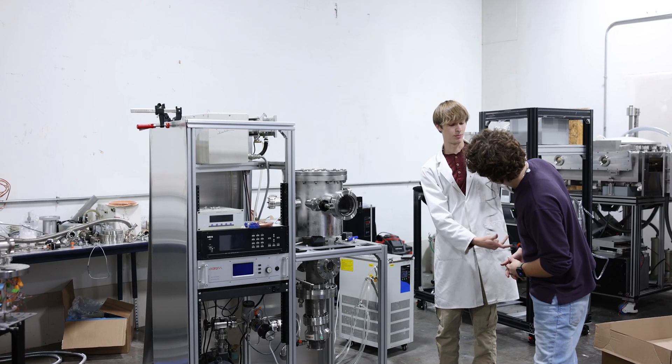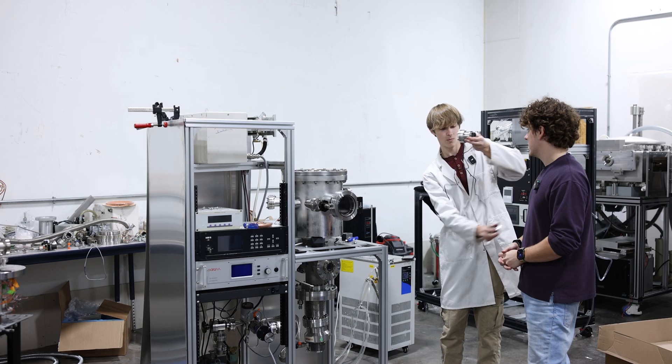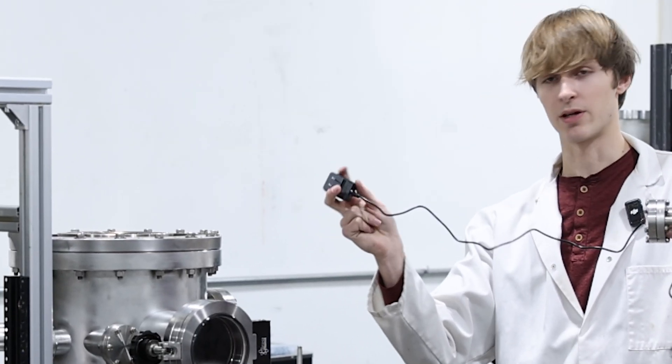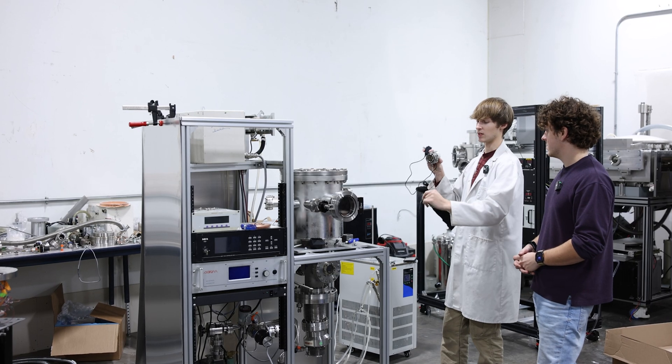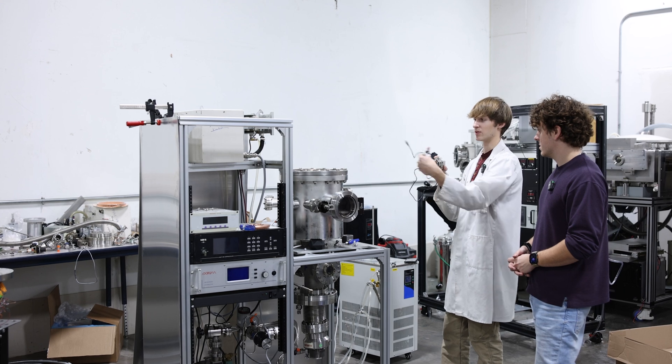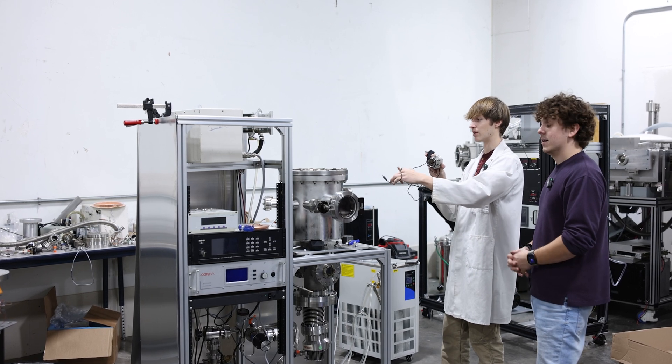So this is our feed through. We're going to be plugging in our AC to the socket, and then this is going to go inside the vacuum chamber and we're going to plug this into our little electromagnet.